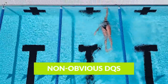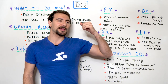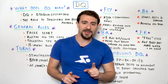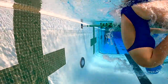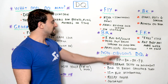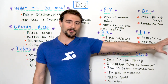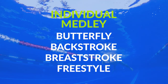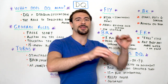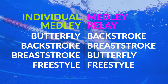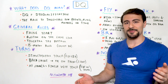Now let's talk about non-obvious ways to get disqualified — things even elite swimmers experience at national championships and the Olympic Games. The first is IM order. The individual medley order is butterfly, backstroke, breaststroke, freestyle — you can't change it. The medley relay order is different: backstroke, breaststroke, butterfly, freestyle. If you swim any other order, you're disqualified. These are consistent rules and cannot be changed.